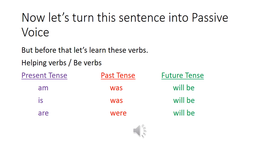Present tense, past tense, future tense. First, B verbs. Was, past tense. Were, past tense. Future tense will be. Is, future tense will be. Are, future tense will be.